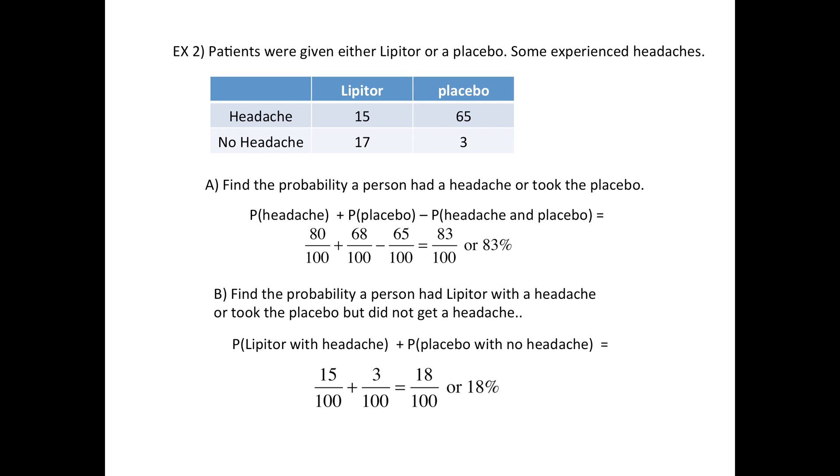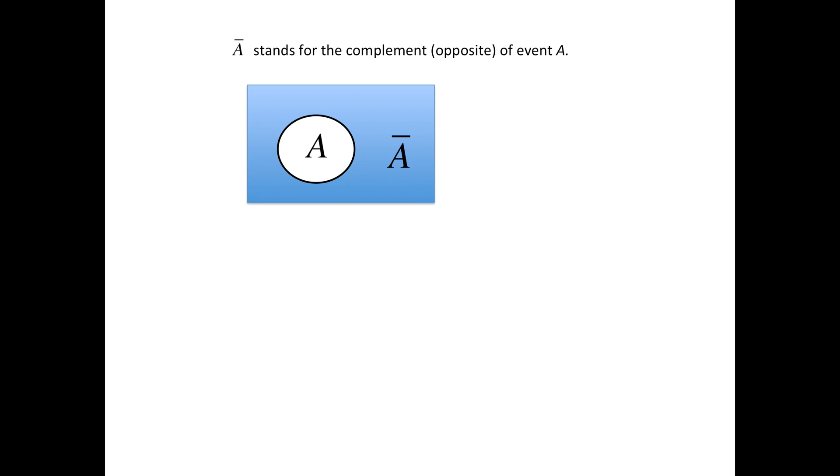The next definition is the complement, which is another way to say the opposite. If A lives in this white circle, then the complement of it is all the rest of the blue stuff—everything except A. And the probability of A is equal to 1 minus the probability of the complement.